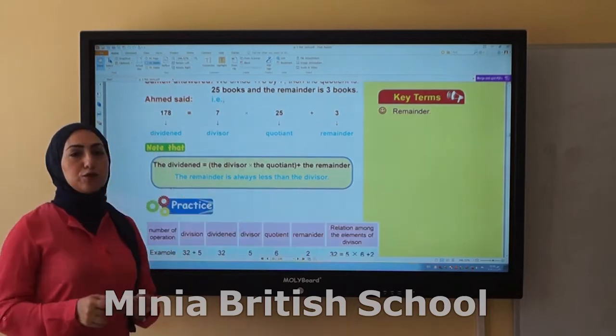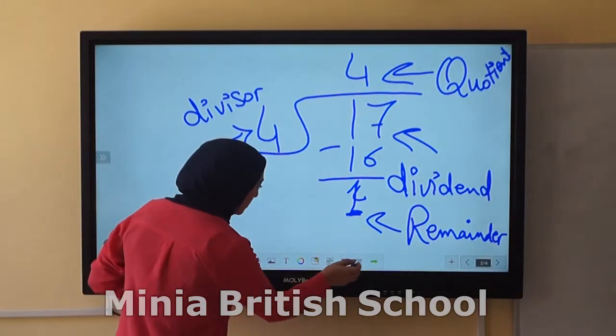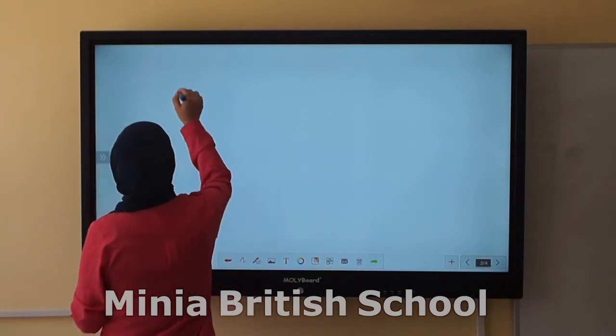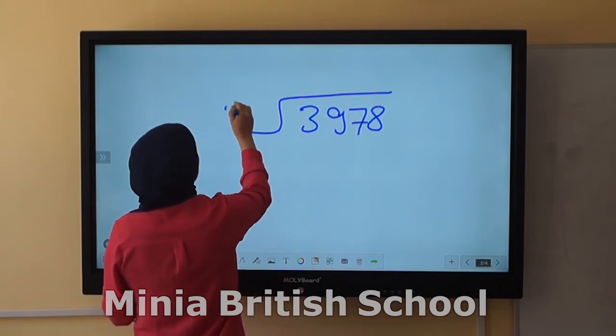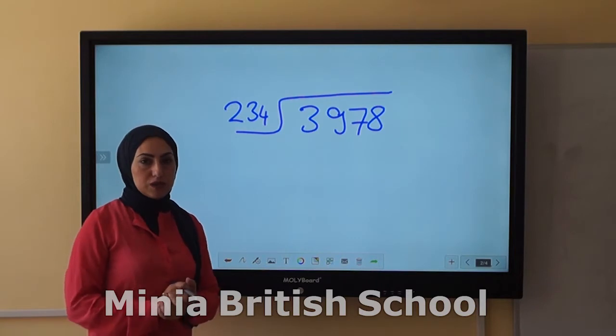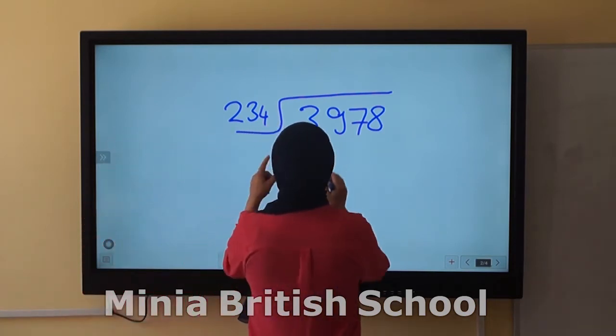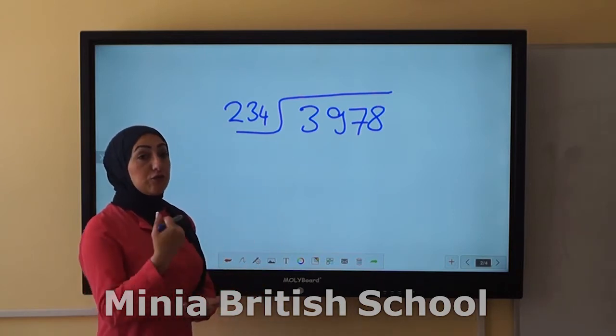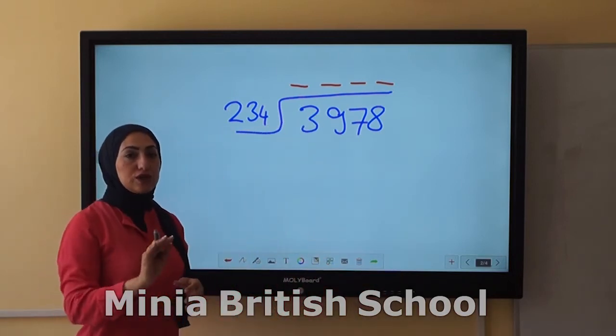To divide any number by a string region number, you think it's difficult, but I'll show you a way to be easier for you. For example, if we have 3,973 divided by 234, in this kind of questions we have to try many times. But I'll show you a way to try 2 or 3 times maximum.